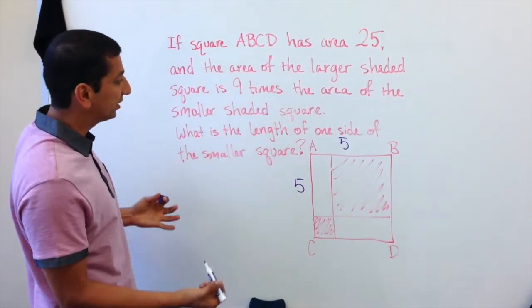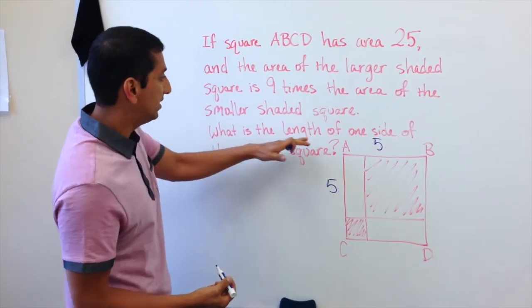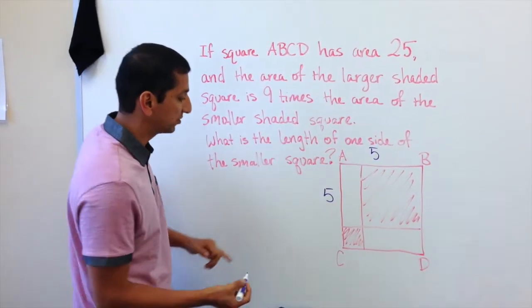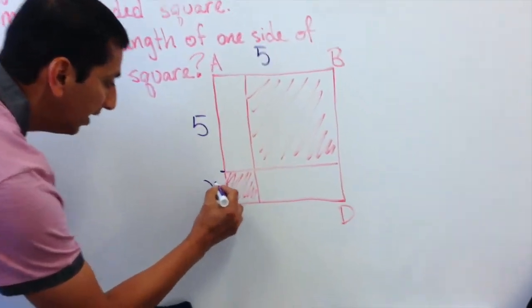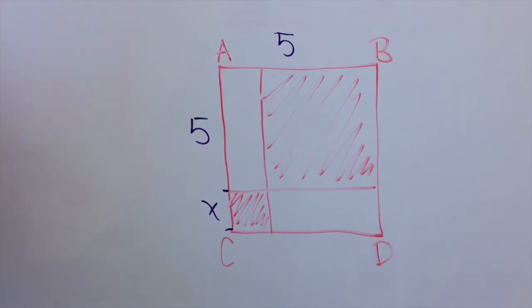Okay, and the thing that we're looking for is the length of one side of the smaller square. So I will label that, this little section here, X.